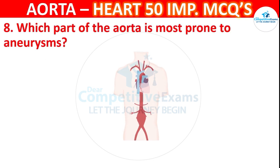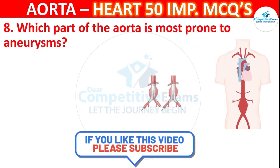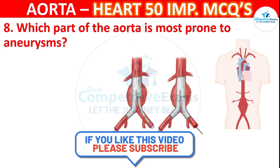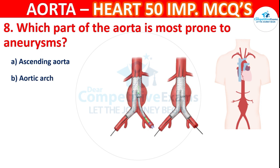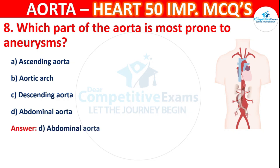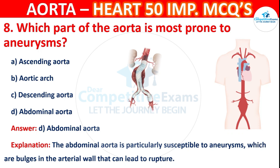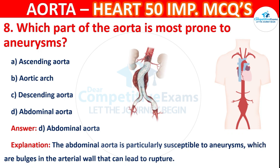Question number 8: Which part of the aorta is most prone to aneurysms? Options are ascending aorta, aortic arch, descending aorta, or abdominal aorta. The correct answer is D — abdominal aorta. The abdominal aorta is particularly susceptible to aneurysms, which are bulges in the arterial wall that can lead to rupture.